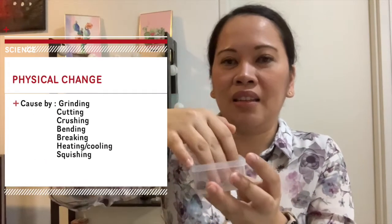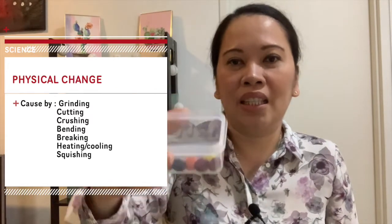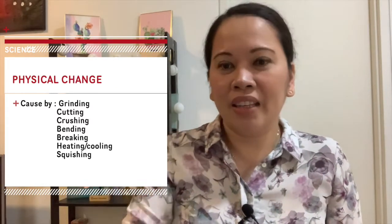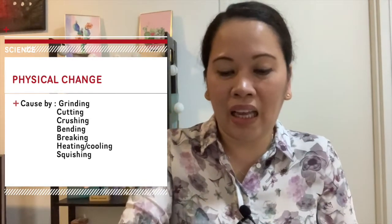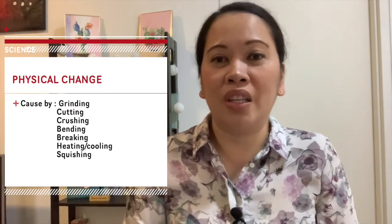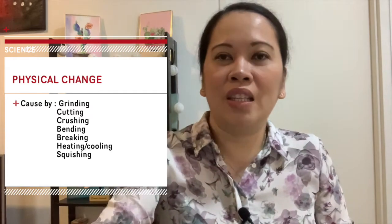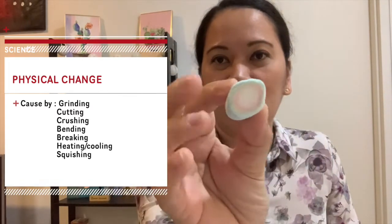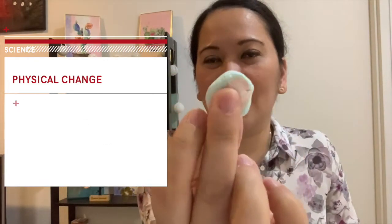A physical change might be caused by grinding — for example, using a hammer or mortar and pestle to grind this chocolate — by cutting or crushing, or by heating and cooling. Even with this marshmallow: if I squeeze it, the shape will change, and that is also a physical change.